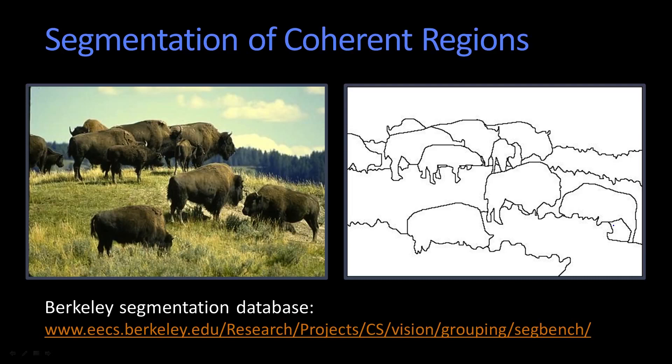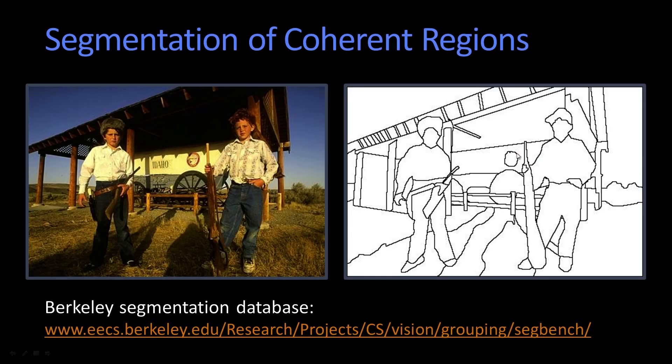This database that's pointed to — they recorded a whole bunch of segmentations done by people, and that can be used to train systems. Here's just another example taken from a typical American scene, and it even says that it's in Idaho. You can see that the regions that were cut out seem to correspond intuitively to what you might think of as the different objects, or something more along the lines of different parts.